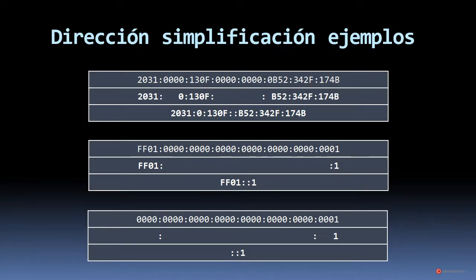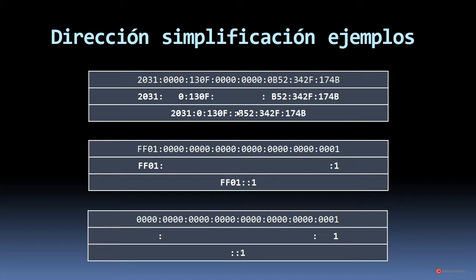En esta diapositiva tenemos algunos ejemplos adicionales de la simplificación de direcciones IPv6. Empezamos con la de la parte superior: tenemos un bloque compuesto solamente de ceros y dos bloques seguidos también de ceros. En la dirección simplificada, reemplazamos ese bloque de cuatro ceros por un cero, y los dos bloques del medio, también formados por ceros, los hemos reemplazado por dos puntos dobles (::).